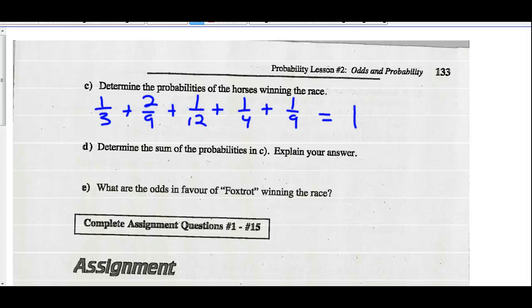Explain what this answer means. It means that someone must win the race. One of those 5 horses will win the race. And the sum of all those has to add up to 100%.